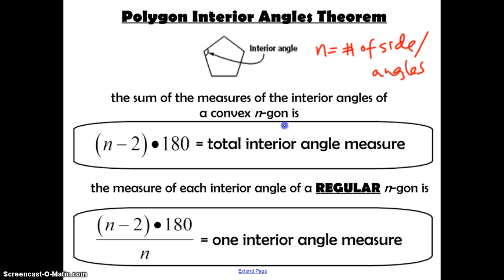When we say n-gon, that just refers to the number of sides it has. The measure of each interior angle of a regular n-gon — remember, regular means equilateral and equiangular, so every angle is exactly the same. If you're trying to find one of those, use the formula (n−2) × 180 to give you the total interior angle measure, and then divide that by n to give you one interior angle measure.